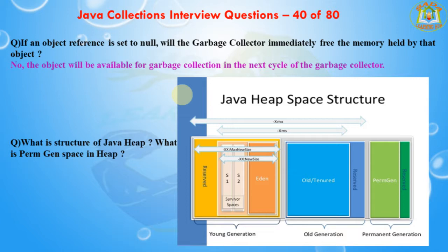The next question is: what is the structure of the Java heap? The JVM has a heap that is the runtime data area from which memory for all classes, instances, and arrays is allocated. It is created at JVM startup. Heap memory for objects is reclaimed by the automatic memory management system, known as the garbage collector. Heap memory consists of live and dead objects. Live objects are accessed by the application and will not be subject to garbage collection. Dead objects are those which will never be accessed by the application but have not yet been collected by the garbage collector — such objects occupy heap memory space until they are eventually collected.